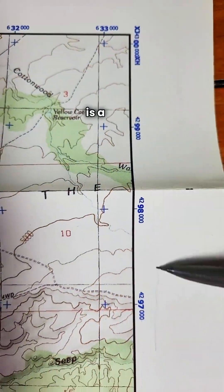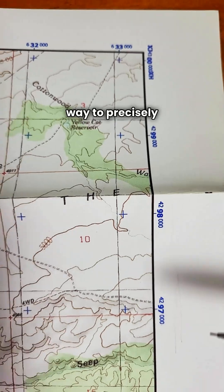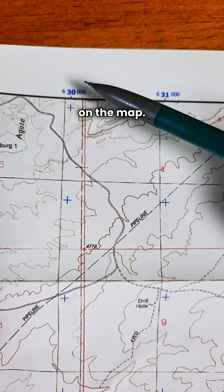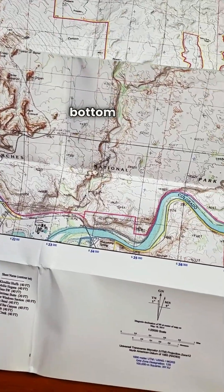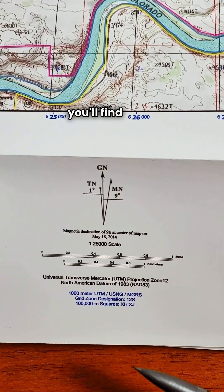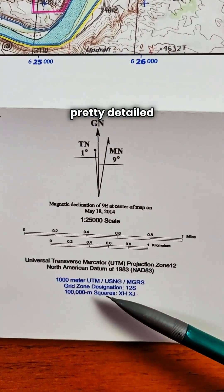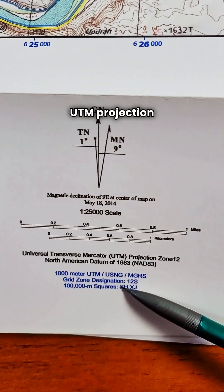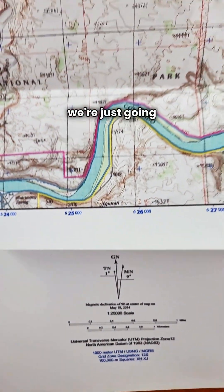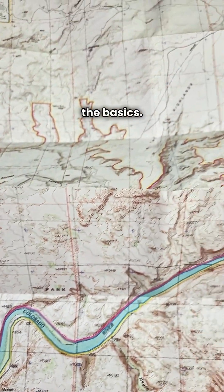Using UTM coordinates is a great way to precisely find your location on the map. Look along the bottom of the map near the scale bar and you'll find some pretty detailed UTM projection information, but for now we're just going to focus on the basics.